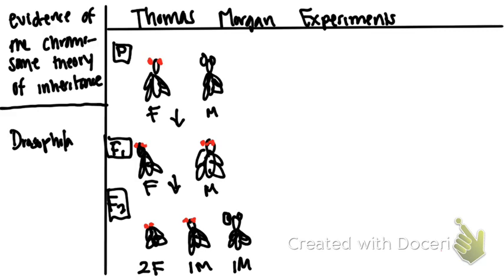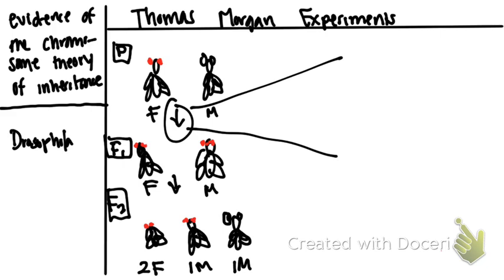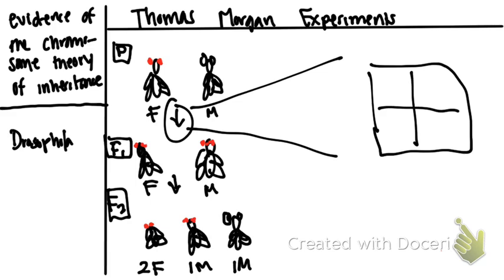This told us a couple of things. First, white eyes is a recessive trait, meaning that phenotypically the F1 generation both had red eyes, but they were carriers for the white eye allele. And every single time he mated the F1 generation, he only ever got a white-eyed male — he never got a female with white eyes. The Punnett squares show exactly why.